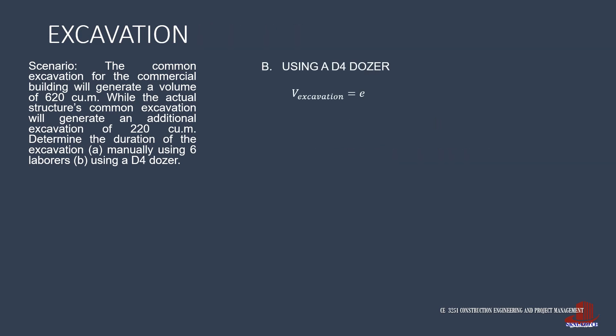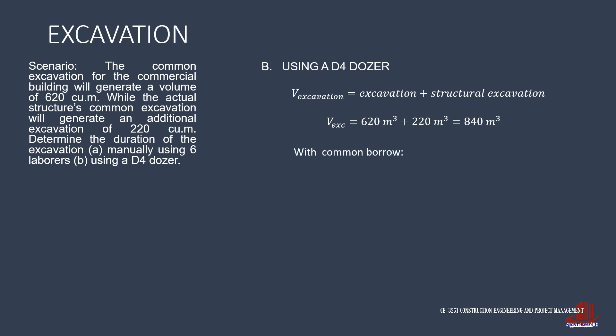When using a D4 dozer, the total volume will still be used, and that is 840 cubic meters. Such volume will be divided by the capacity of one dozer, which is 210 cubic meters for a D4. By doing so, the excavation can be completed in 4 days.